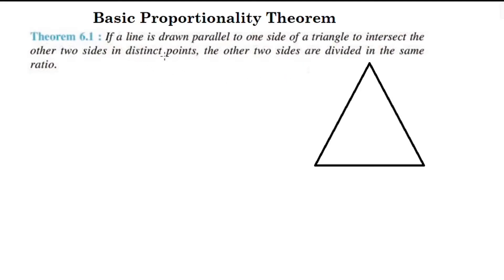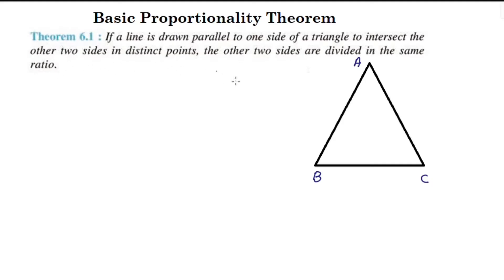If a line is drawn parallel to one side of a triangle to intersect the other two sides in distinct points, the other two sides are divided in the same ratio.